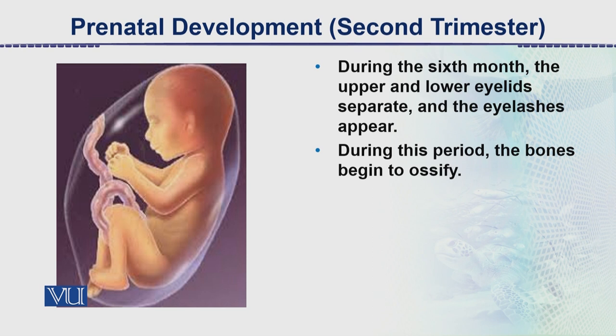In the first trimester the structure is cartilaginous, लेकिन उसके बाद ossification शुरू हो जाती है। इस दौरान bone formation की start हो जाती है, लेकिन note करें कि ये bones उतनी strong नहीं होतीं — ये flexible होती हैं। लेकिन बाद में ossification और calcification start हो जाती है इस period के दौरान।